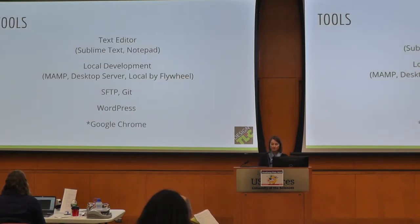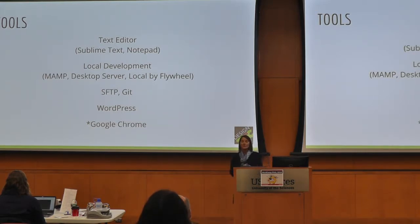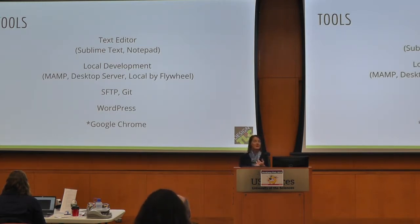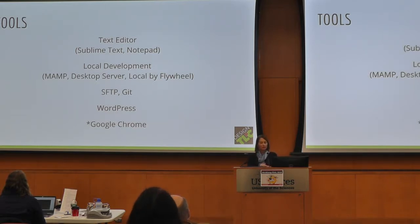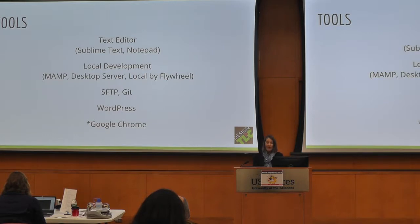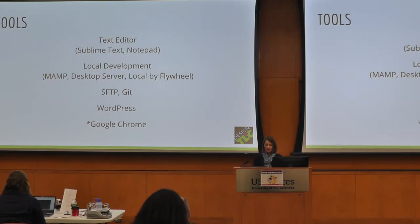We're going to be looking at Chrome today. The tools we'll be using — if you have your laptop out and want to follow along or take notes — include a text editor like Sublime Text or Notepad, both of which are free. Also local development environments like MAMP, WAMP, XAMP, Desktop Server, or Local by Flywheel. My example today will use Local by Flywheel, which is a free package from Flywheel. And an SFTP client or Git to push your local code up to your live server.